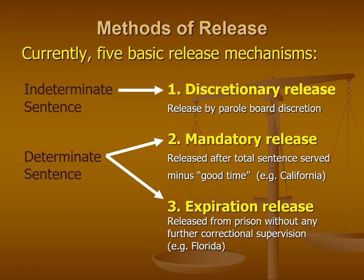That's what California has been doing for the last several decades under mandatory release. More often than not, individuals are still going to be released to some form of parole supervision after release. This is sort of the halfway point between discretionary and expiration release — the individual still serves time in prison and is then supervised in the community under parole, but it takes out the human element: the parole board decision-making element of the release process.